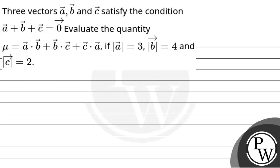Hello. So let's discuss the question. The question says: three vectors — vector a, vector b, and vector c — satisfy the condition vector a plus vector b plus vector c is equal to zero vector.